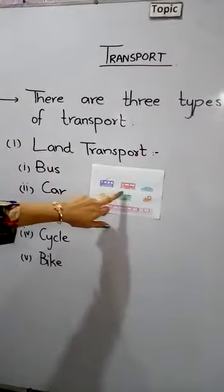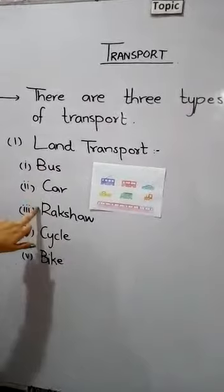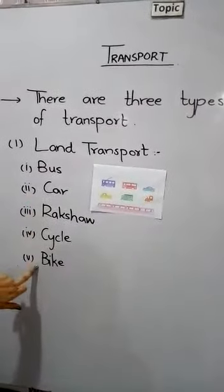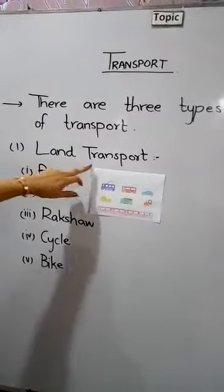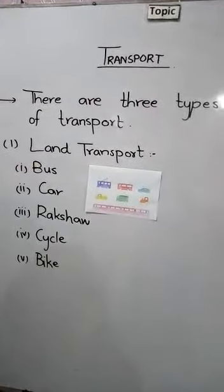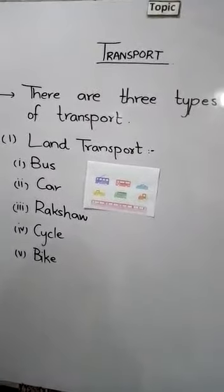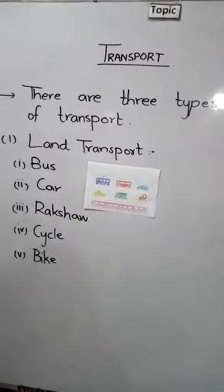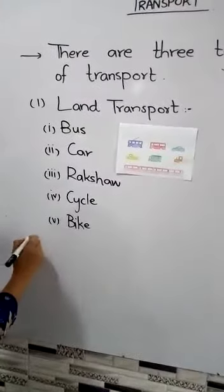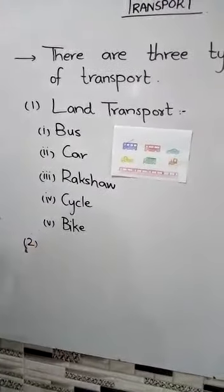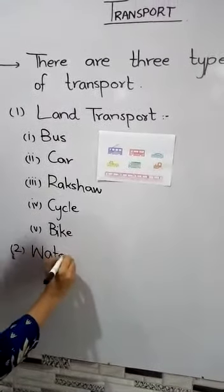Land transport vehicles run on roads and travel on land. Land transport helps us to move from one place to another. The second type of transport is water transport.